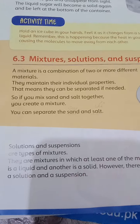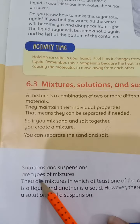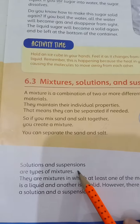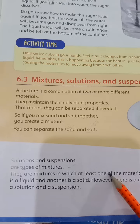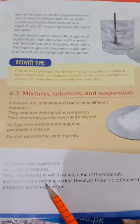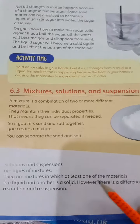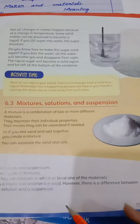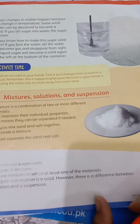Now, solutions and suspensions are types of mixtures. They are mixtures in which at least one of the materials is a liquid — so one material is liquid and the other is a solid. However, there is a difference between a solution and a suspension.